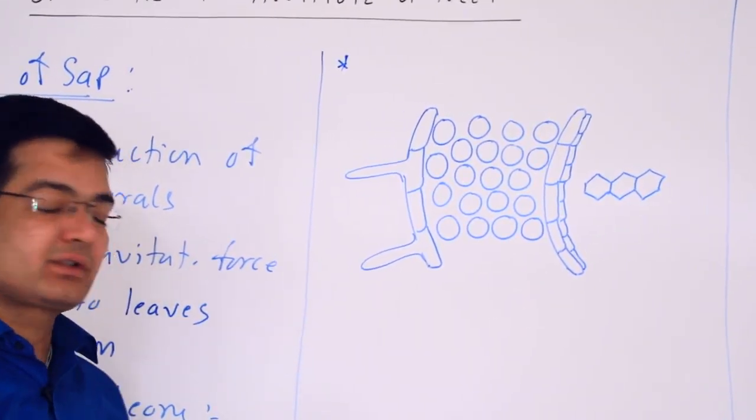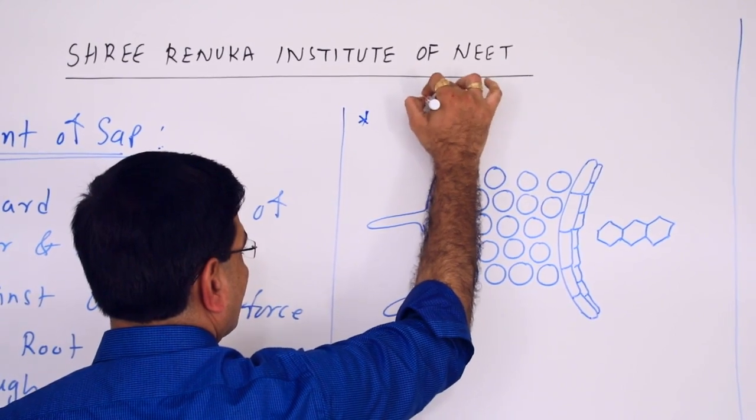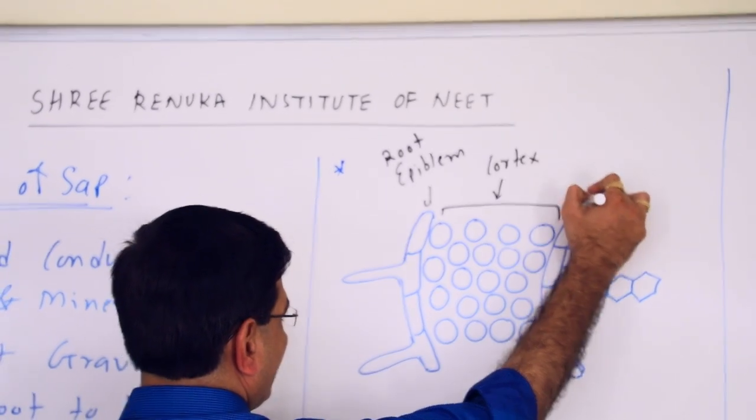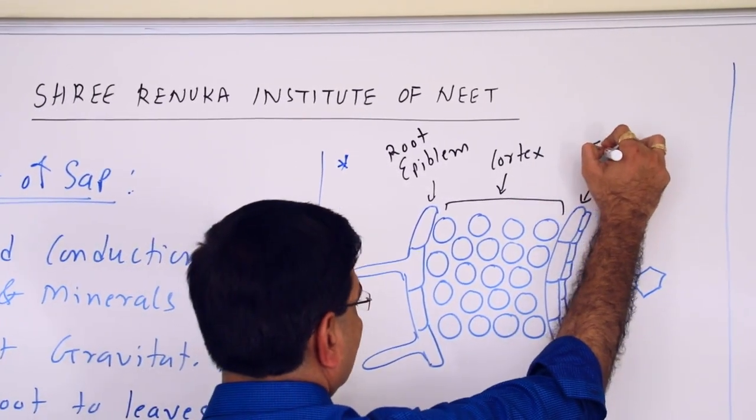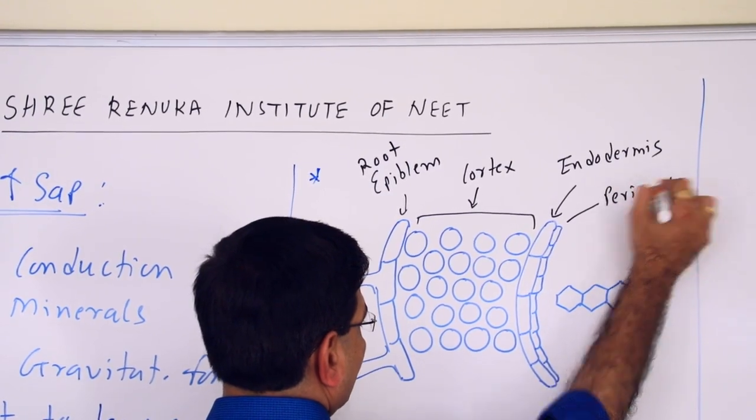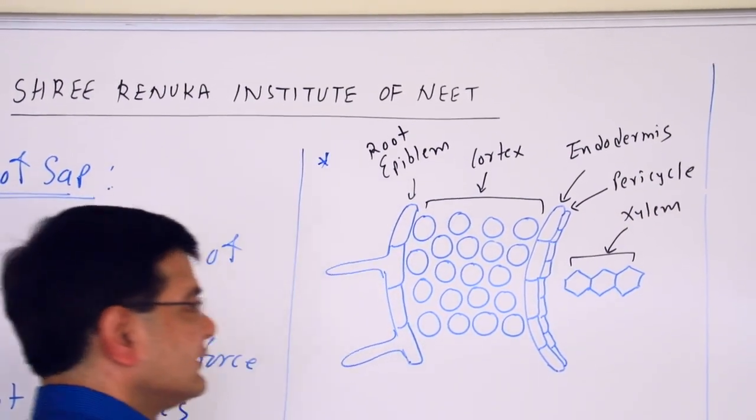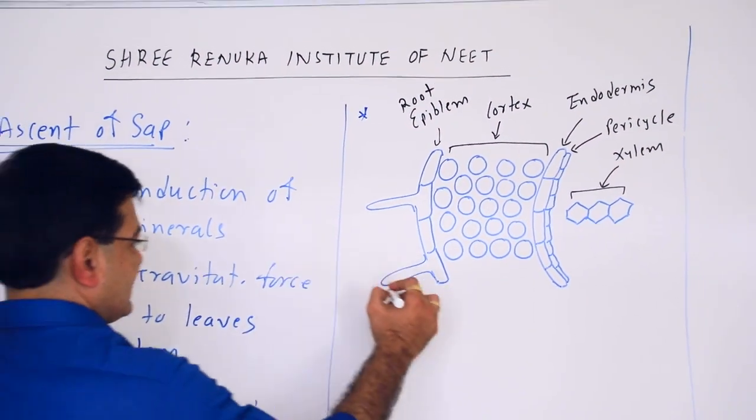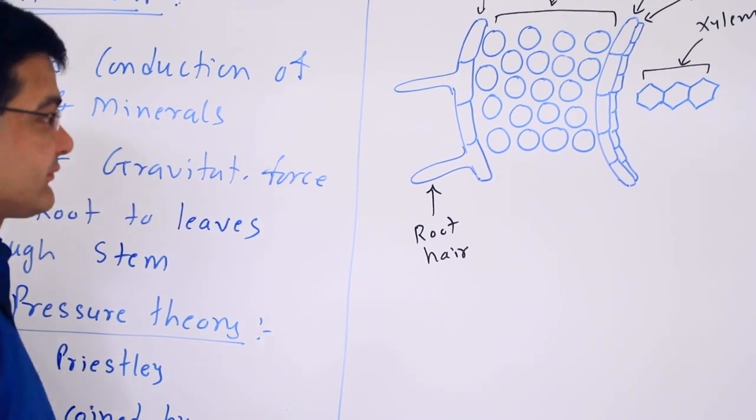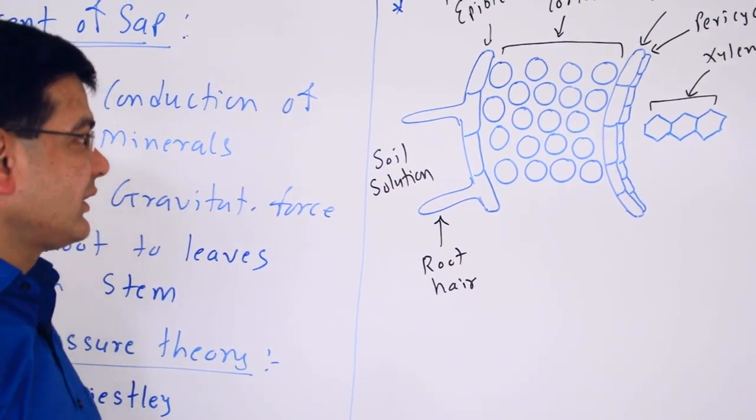This is the transverse section of the root. This is root epidermis, the cortex, endodermis, pericycle, and xylem vessel. These are the root hairs which increase surface area for absorption of water and minerals. From the soil solution, water is absorbed by the root.